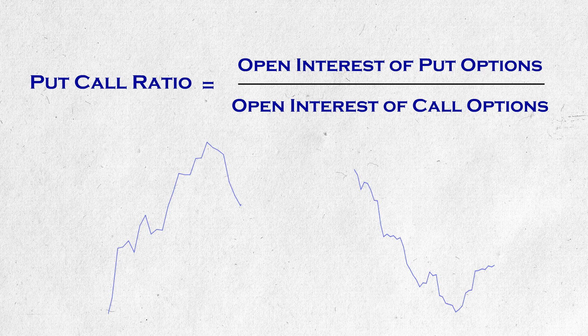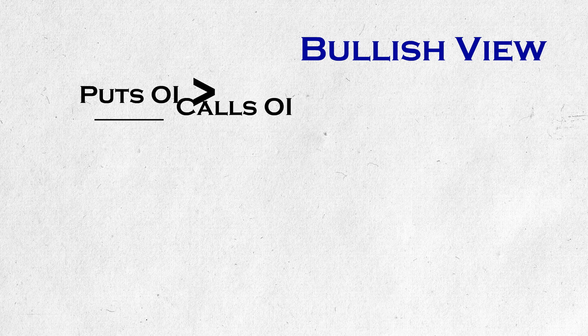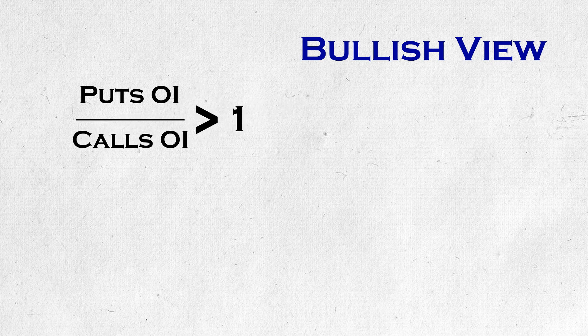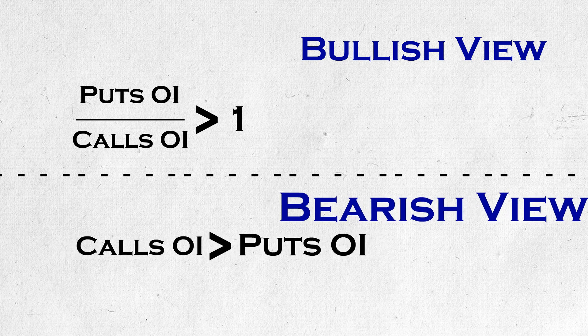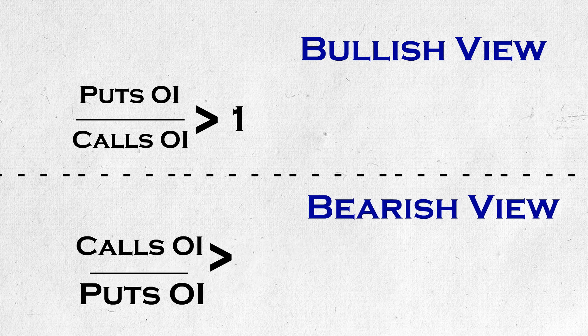If there is more activity in put options, and we already believe that sellers are mostly correct, then the put option seller's view is bullish. Also, if there is more activity in call options, the view may be bearish. So, if put option's open interest is greater than call option's open interest, the market is bullish. If this PCR value is more than 1 and rising, the probability is towards a bullish trend continuing. Similarly, if call's open interest is greater than put's open interest, sentiment may be bearish, and if PCR is less than 1 and falling, then the probability is for a bearish trend continuing.